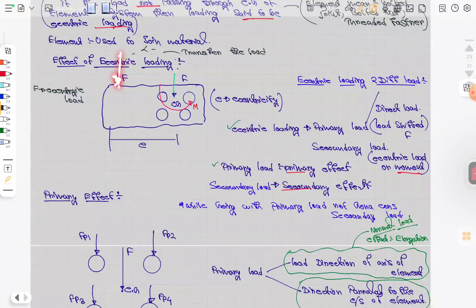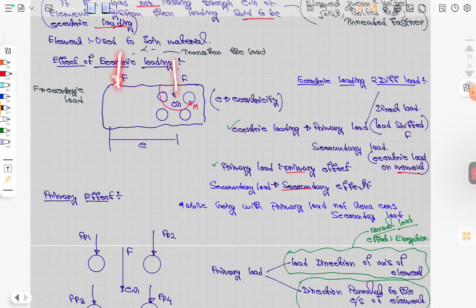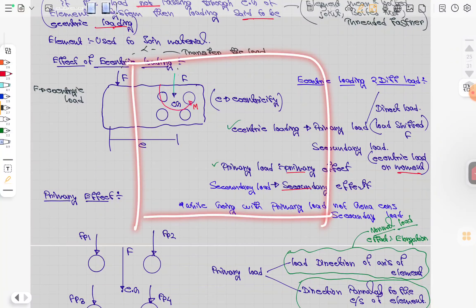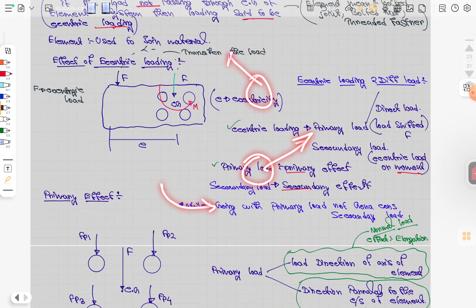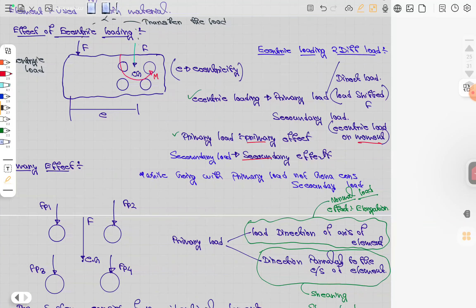When load is applied at some distance, there's also a moment that will work, creating secondary forces. Suppose there's a banner here - due to this force, how will it work on these elements? This force will try to go to this side, that side, creating secondary loads. That's how eccentric loading creates both primary and secondary loads.